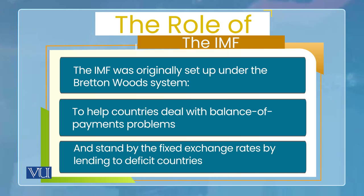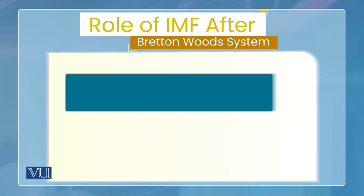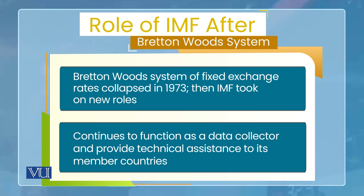The IMF's original loan role was not for development purposes. The Bretton Woods System was a fixed exchange rate system, which was maintained when a country faced a balance of payment crisis. This was originally its role. But in 1973, the Bretton Woods System collapsed, and the fixed exchange rate system collapsed with it.